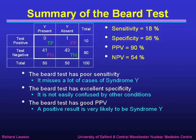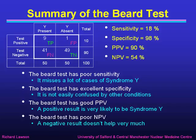The beard test has a good positive predictive value of 90%, meaning a positive result is very likely to be right — a person with a beard is highly likely to have Syndrome Y. On the other hand, it has a rather poor negative predictive value of only 54%, so a negative result — someone without a beard — doesn't really help you very much. It won't tell you whether they're a man or a woman just because they don't have a beard.